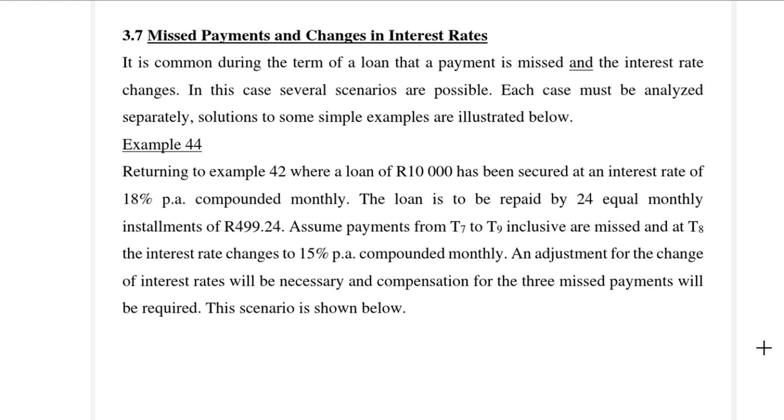Hi, we are going to look at paragraph 3.7 in this video. Paragraph 3.7 is on missed payments and changes in interest rate. In the previous two paragraphs, we looked at them separately. In 3.5 we looked at missed payments and in 3.6 we looked at changes in interest rate. And now we're going to combine the two.